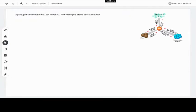Let's start off with this one. This is number seven on both of these. A pure gold coin contains 0.01134 millimoles of gold. How many gold atoms does it contain? Remember that the first thing I'm going to ask, or that you should ask yourself, is: what am I looking for?